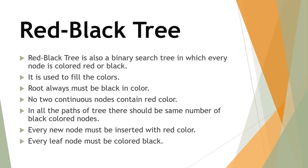Red-black tree — here are some properties of red-black tree. It is also a binary search tree and it uses colors. Every node must be colored with red or black. The root node must be black in color and no two continuous nodes can contain red color. We need to have the same number of black-colored nodes in the tree. Every new node must be inserted with red color and leaf nodes must be colored with black.